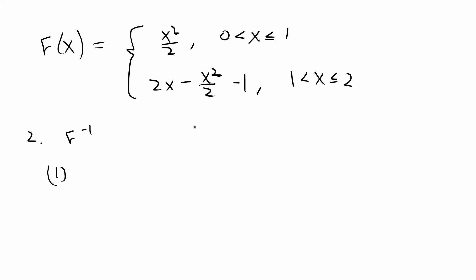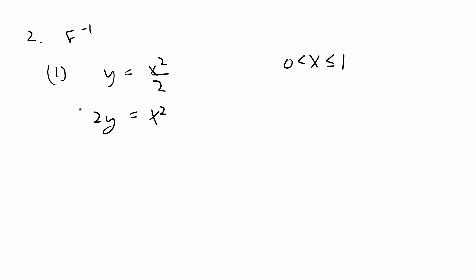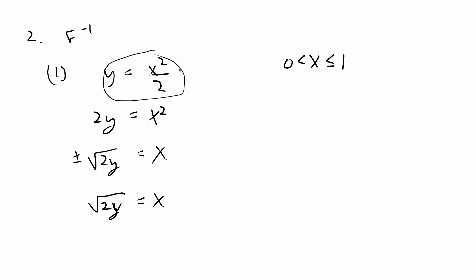I'll find the inverse of the first part first. Setting y equal to x squared over 2, I solve for x: 2y equals x squared, so x equals plus or minus the square root of 2y. Because a CDF must always be greater than 0, we take the positive square root, so x equals the square root of 2y. Converting the x limits to y limits: when x is 0, y is 0; when x is 1, y is 1/2. So the first piece of the inverse CDF is the square root of 2y for y in (0, 1/2].